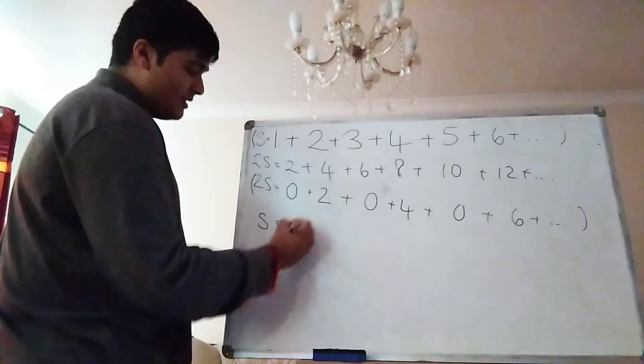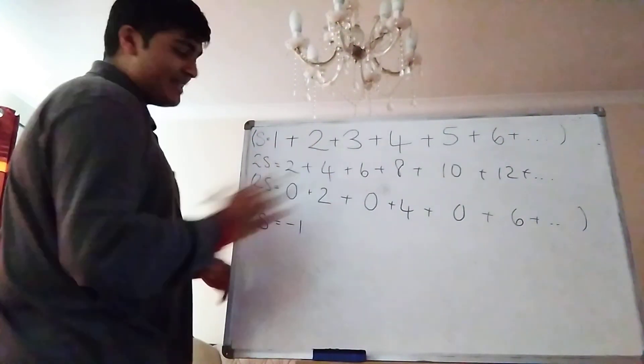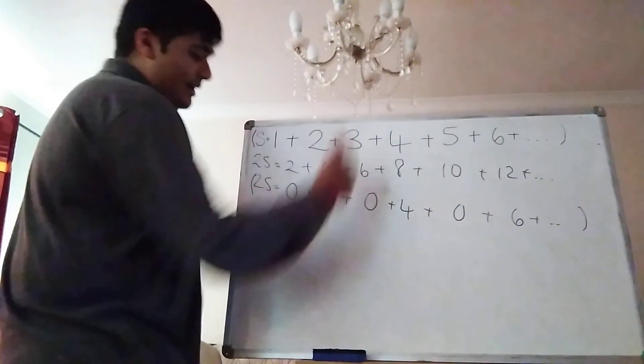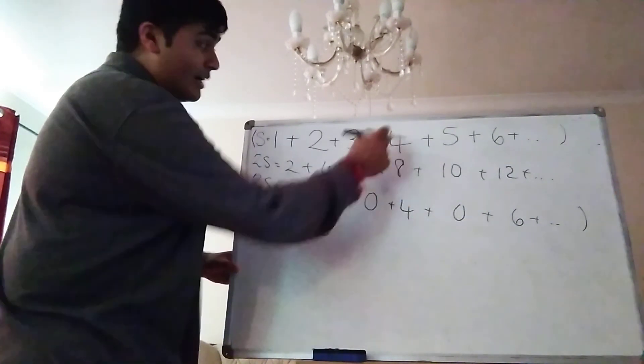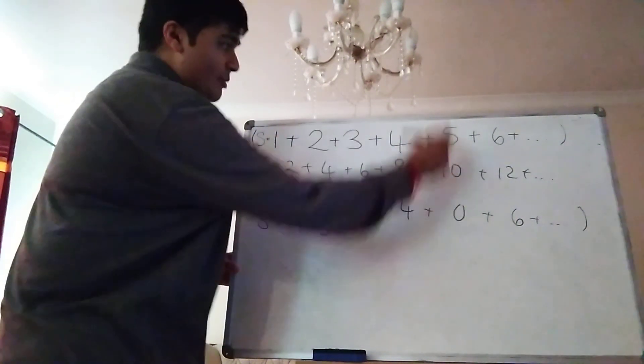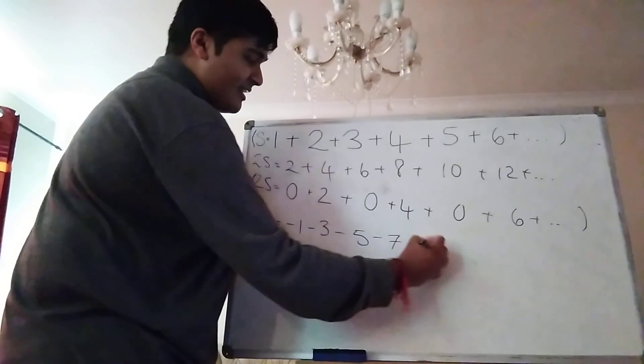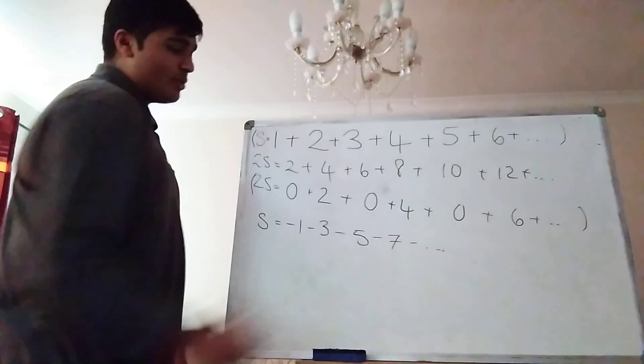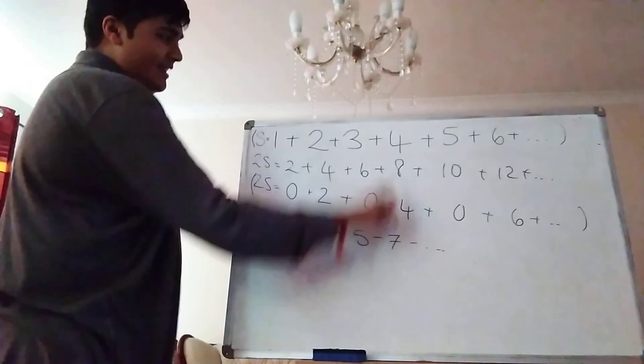On the right hand side I get 0 minus 1. That's minus 1. 2 minus 2. That's 0. So that cancels. 0 minus 3. That's minus 3. 4 minus 4. That cancels. 0 minus 5 is minus 5. Then minus 7. And then so on. I get the negatives of all the odd numbers and all the even numbers here cancel.